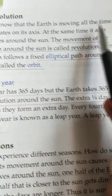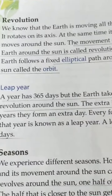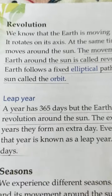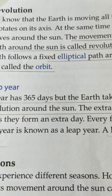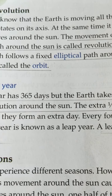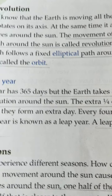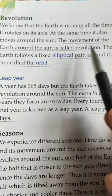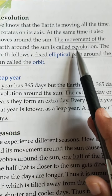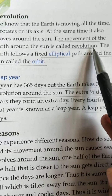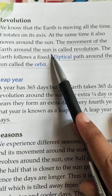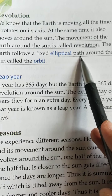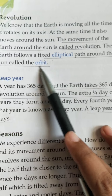We know that the earth is moving all the time. It rotates on its axis — an imaginary vertical line which passes through the center of the earth. At the same time, it also moves around the sun. The movement of the earth around the sun is called revolution. The exact definition: the movement of the earth around the sun is called revolution. The earth follows a fixed elliptical path around the sun, which is called the orbit.